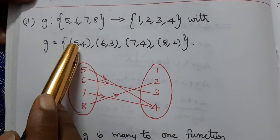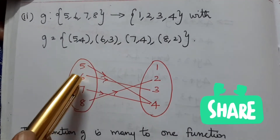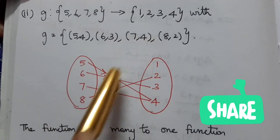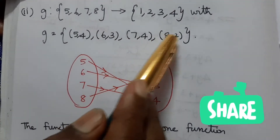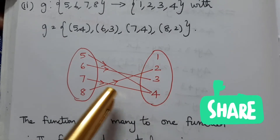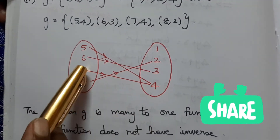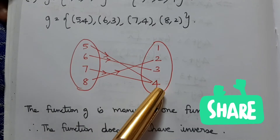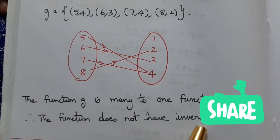Now mapping: 5 maps to 4, 6 maps to 3, 7 maps to 4, 8 maps to 2. Since both 5 and 7 map to 4, this is a many-to-one mapping. Therefore this function does not have an inverse.